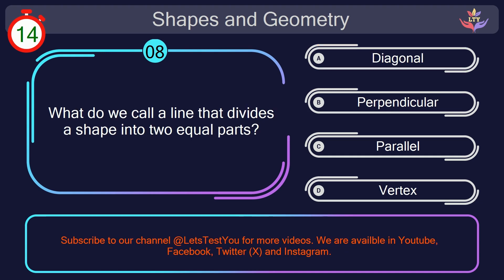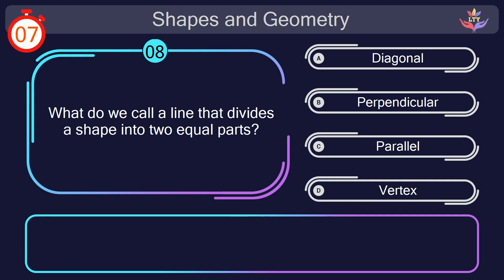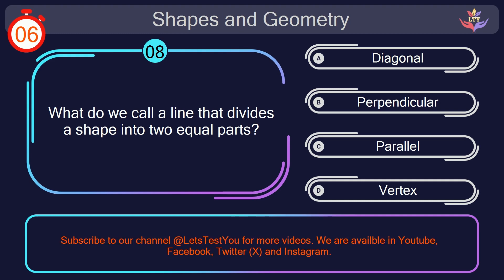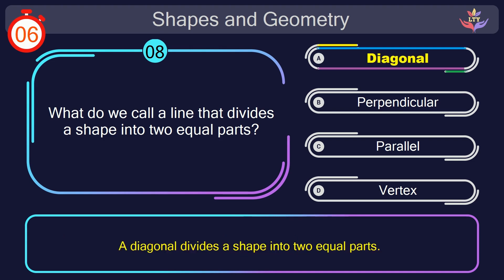Question number 8. What do we call a line that divides a shape into 2 equal parts? Your countdown started. 1, here we go. The correct answer is option A. Diagonal. A diagonal divides a shape into 2 equal parts.